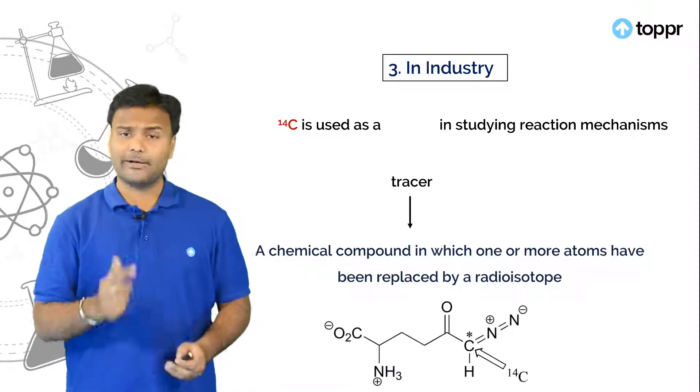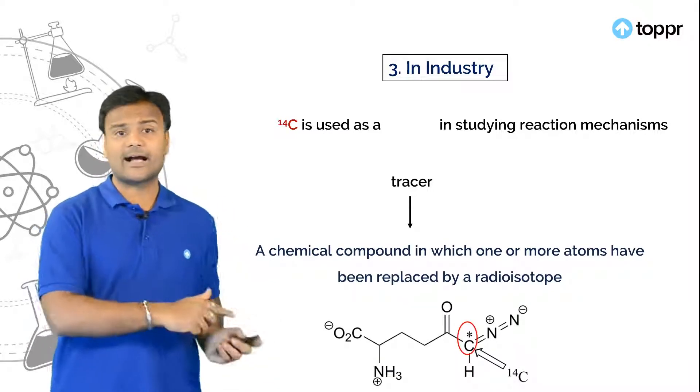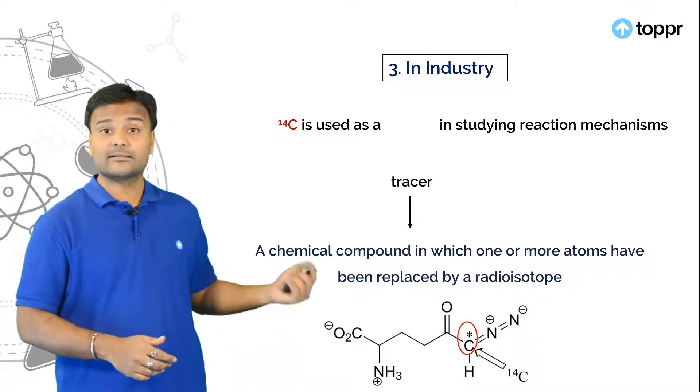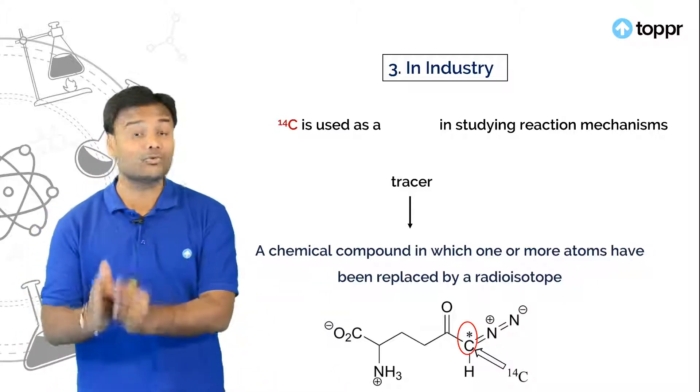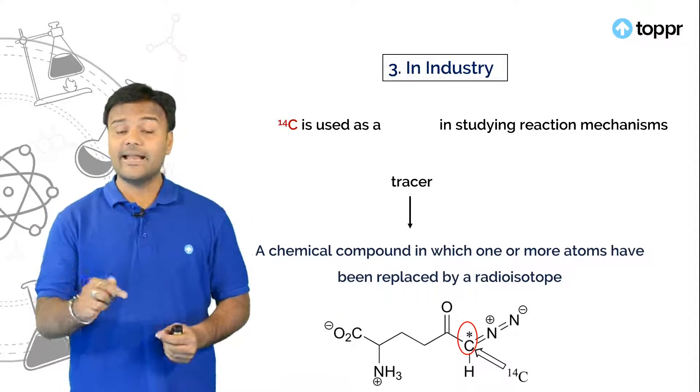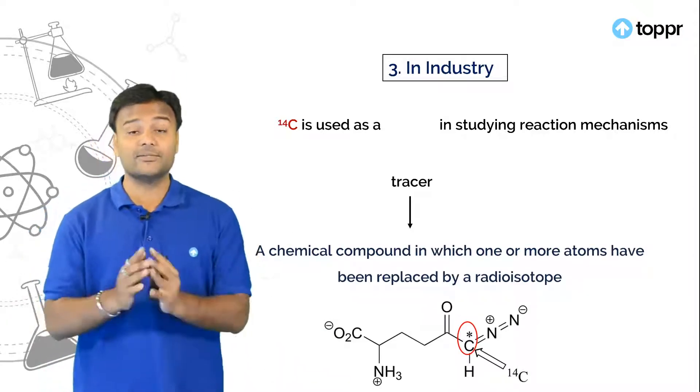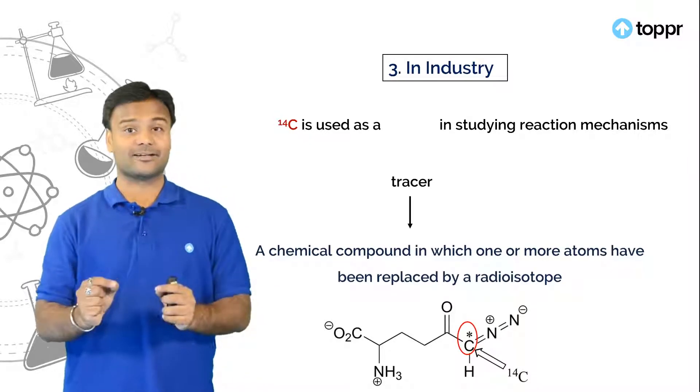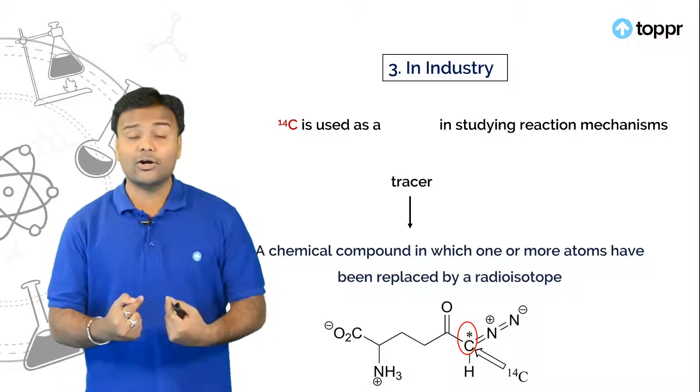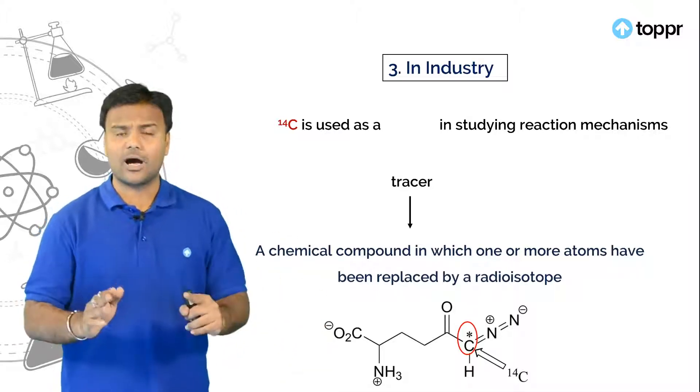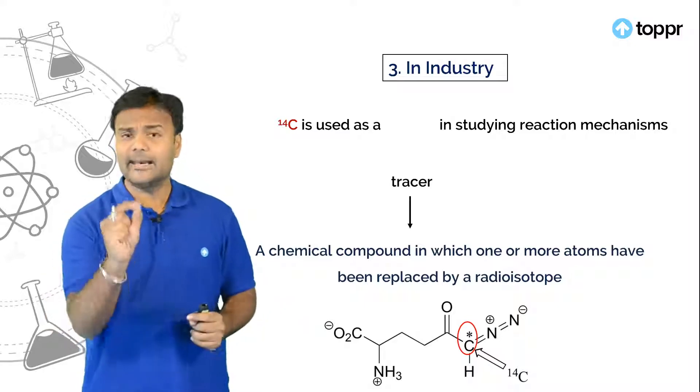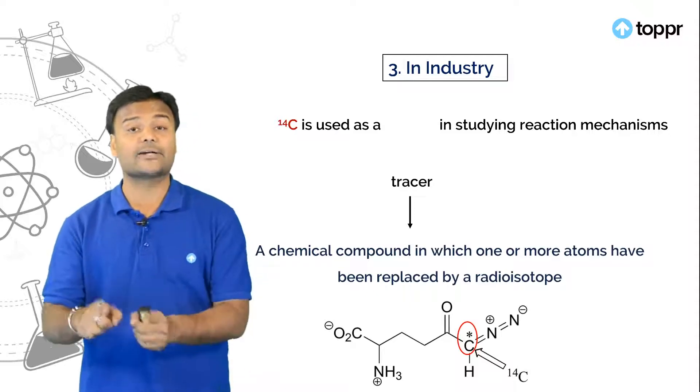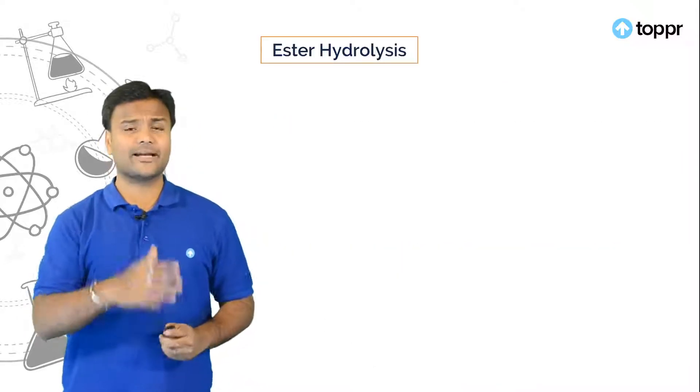Let us understand the same by looking at this example. So here you can see the carbon. This carbon is a radioactive carbon. Usually the rest of the carbons in this structure are carbon 12, which is a stable. Whereas this carbon is a carbon 14 which means this is an unstable carbon and a radioactive element or radioactive isotope of the carbon. So in order to study how this reaction happens or how the mechanism is happening, I can label a particular element in a compound by a radioactive element. Let us understand the same by looking at this reaction.